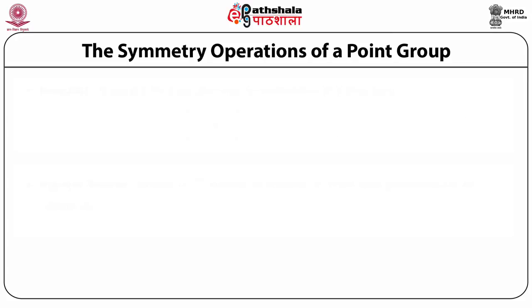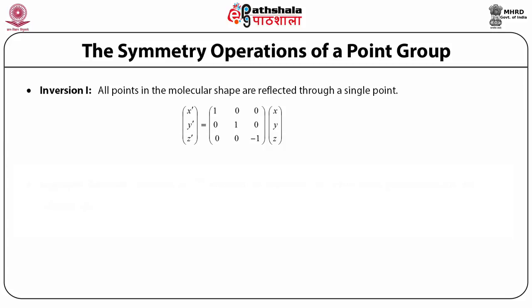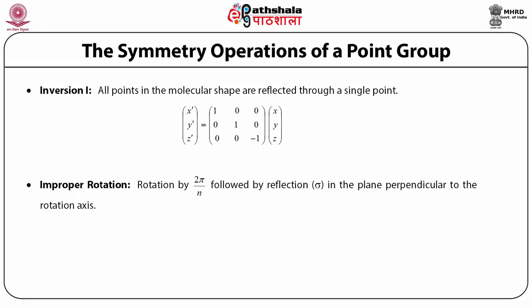After rotation and reflection, we have inversion. The molecular shape may be such that all points on the molecule are reflected through a single point. If reflected through a center point, the components (X, Y, Z) map to (X', Y', Z') where X' = −X, Y' = −Y, Z' = −Z. Another symmetry called improper rotation is a rotation by an angle 2π/n about some axis, followed by a reflection in the plane perpendicular to the rotation axis. If the molecule remains the same after such a combined operation, it possesses improper rotation symmetry.